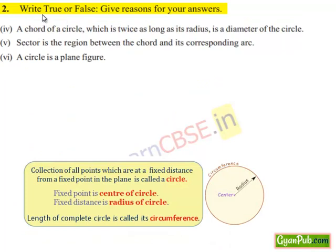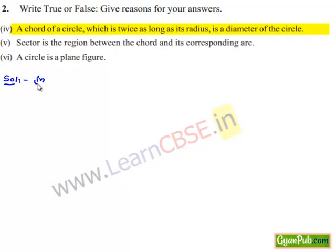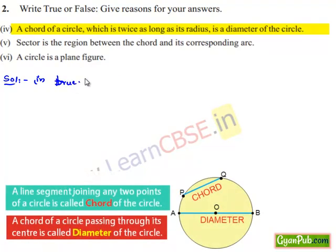Moving on to the fourth bit: a chord of the circle which is twice as long as the radius is called the diameter of the circle — that is true. Because we know that a chord passing through the center of the circle has a length equal to two times the radius. Therefore, that chord is the diameter of the circle.